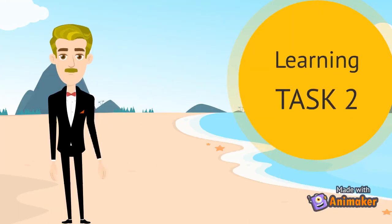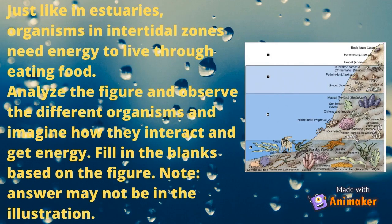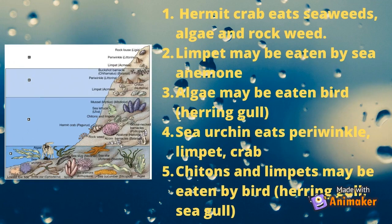Let's do learning task number two. Just like in estuaries, organisms in intertidal zones need energy to live through eating food. Analyze the figure and observe the different organisms and imagine how they interact and get energy. Fill in the blanks based on the figure. Note: answers may not be in the illustration. Number 1: Hermit crab eats seaweeds, algae, and rockweed.